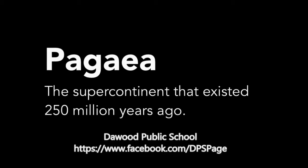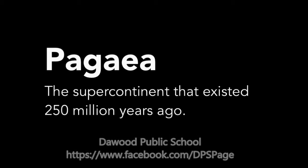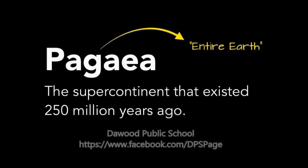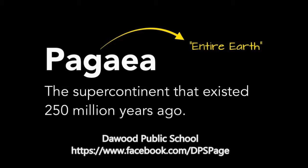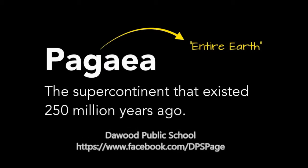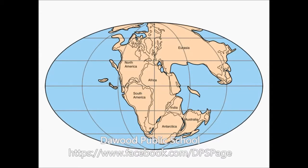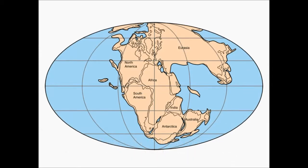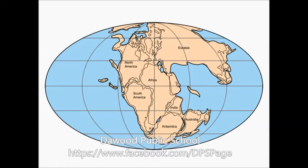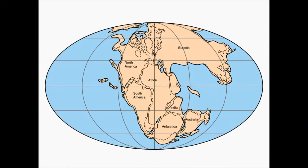The supercontinent he believed existed about 250 million years ago. Pangaea is actually an appropriate name — it's a Greek term that means 'entire earth' or 'all earth.' So if all the continents were together, it would make sense to call that landmass Pangaea. Here's what he thought it looked like. You can see within this diagram the modern-day continents of North America, Africa, South America, Antarctica, India, and others — but they don't look quite the same as today, and they're in totally different positions, all connected into this one supercontinent.